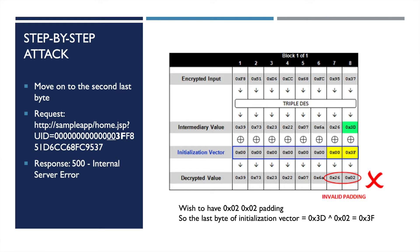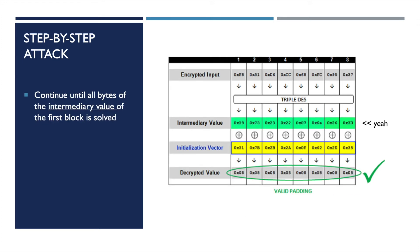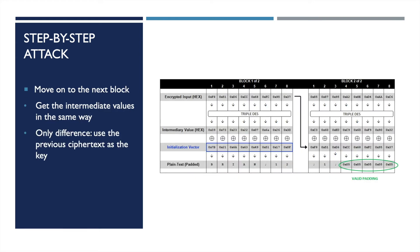For the second last byte, we will continue to do a brute-force guess, starting from 0x00 and continuously increasing it until the decrypted value reaches 0x02, 0x02. When we try 0x24, we get the desired padding. Thus, the second last byte of the intermediary value in block 1 is 0x24 XOR 0x02, which is 0x26. Then we continue in the same way until all bytes of the intermediary value of the first block are solved. Next, we move on to the next block and solve its intermediary value in the same way, but now we use the previous ciphertext as the key instead of the initialization vector. Since we now know the intermediary values of all blocks, we can XOR the intermediary value with the key to get the ASCII code for our text. Decryption completed.